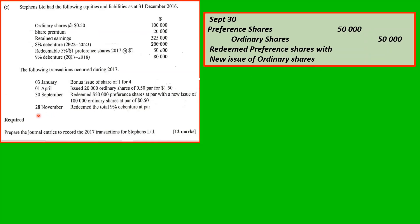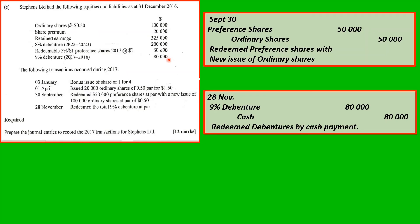On the 20th of November, redeem the total 9% debentures at par — $80,000. Journal entry: debit 9% Debentures $80,000; credit Cash $80,000 — to redeem the debentures by cash payment.